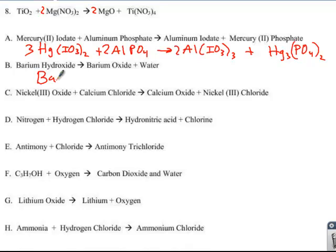B, Ba(OH)2. Remember the parentheses around hydroxide. Common mistake to forget those parentheses. BaO, H2O for water. So there's the correct formulas, and it's already balanced.